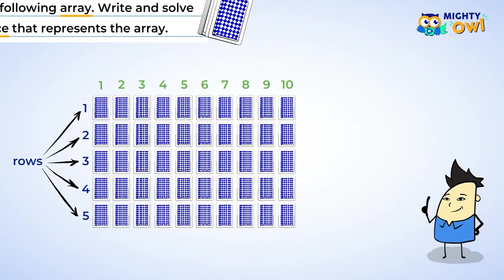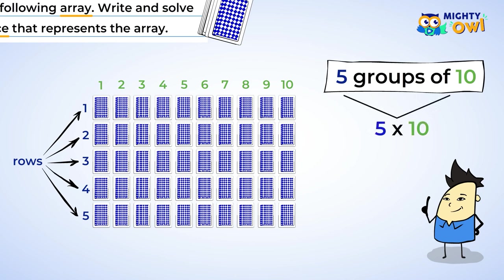You can start by counting the number of rows and columns. There are five rows, so that means you have five groups. You can count the columns to find ten. Each of the groups has ten cards. So you have five groups of ten cards. Now change it to a multiplication sentence.